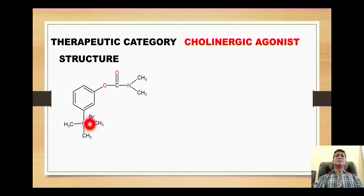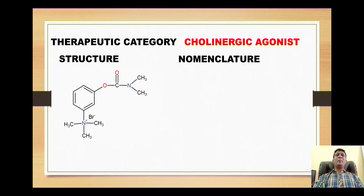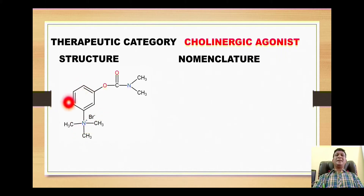Here is the presence of a carbamoyl group where the nitrogen is attached with two methyl groups. This nitrogen is the quaternary nitrogen acquiring the positive charge, having an ionic bond with the bromide ion — that's why the name is given as neostigmine bromide. For the IUPAC nomenclature, we will select the salt form where the nitrogen has the positive charge and the bromide ion is in ionic bond with the nitrogen.